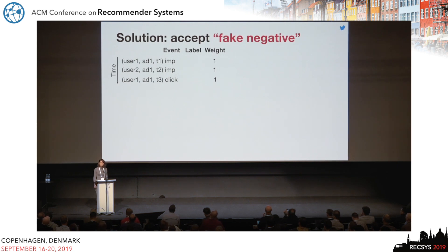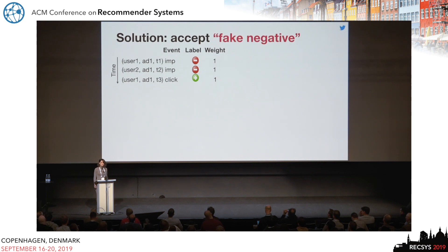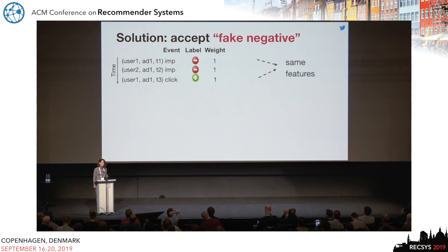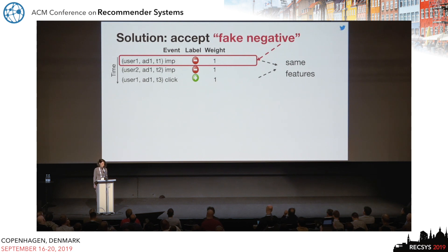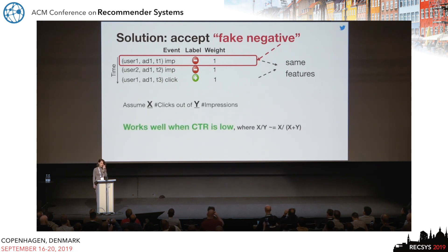One way to tackle this problem is to introduce all ad samples to the models with a negative label initially. In this example, we have the same ad shown to two different users, and this is originally introduced to the model with a negative label. As soon as user 1 clicks on the ad, the same ad sample is again introduced to the model, but this time with a positive label. In this case, we have a duplicate of the user-ad features, and this renders the original sample a fake negative. This might work well in cases where we have a low click-through rate, but not otherwise.